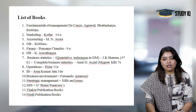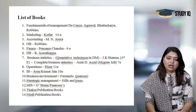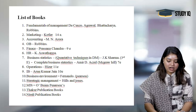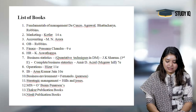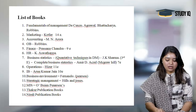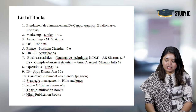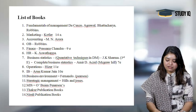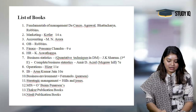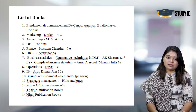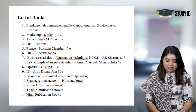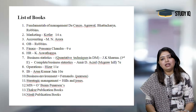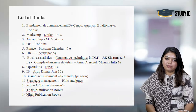The books I am recommending are very comprehensive. For Operations Management, the book is by Hazar, 11th edition. For International Business, refer to Arun Kumar Jain, 10th edition. For Business Environment, refer to Fernando by Pearson Publications. For Strategic Management, Hills and Jones. For MIS, the book is by O'Brien, Pearson Publications. The entire book list is available in the description box.